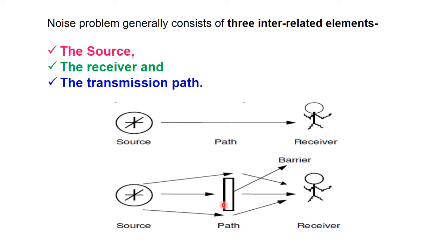When there is a barrier, it depends upon the source — how many sound frequencies are generated. Some frequencies may cross over the barrier, some can be transmitted, and some can rebound back. Certain sound waves with the lowest frequency cannot reach the receiver.